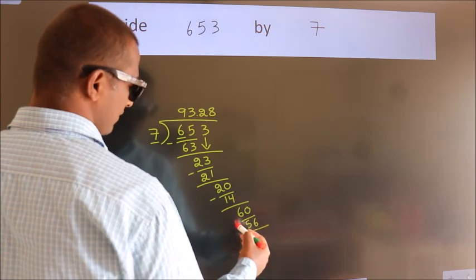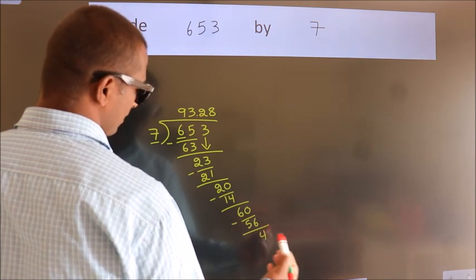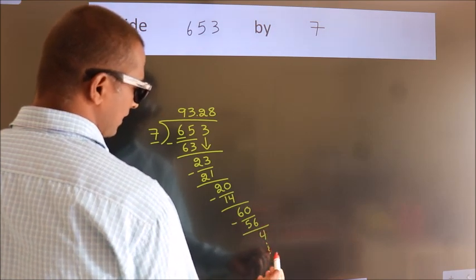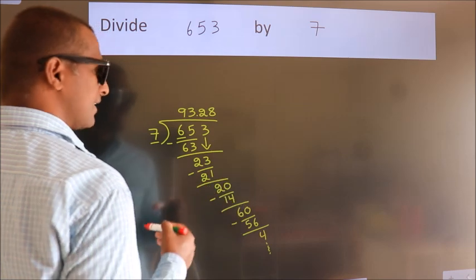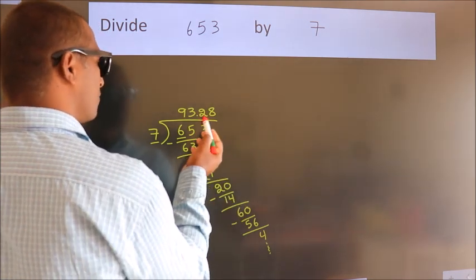Now we subtract. We get 4. And the division continues. It is enough if we do up to 2 decimal places.